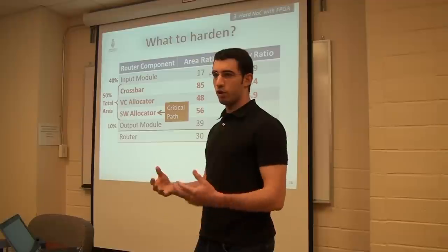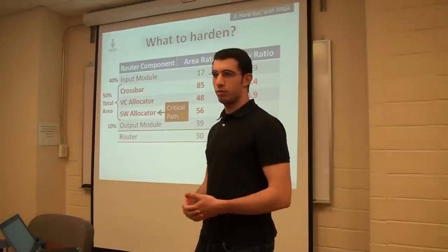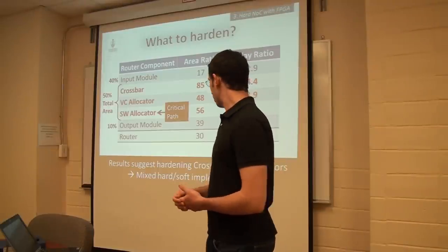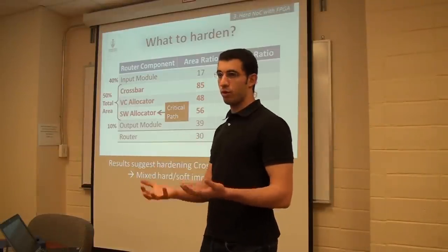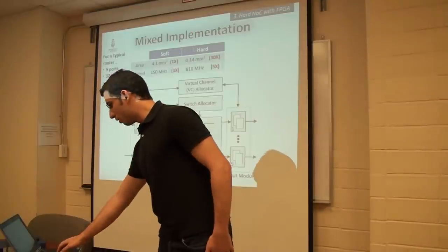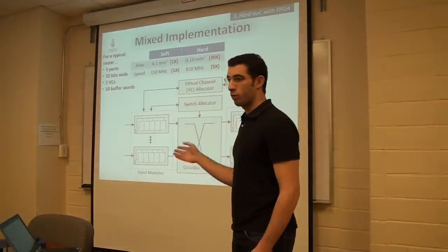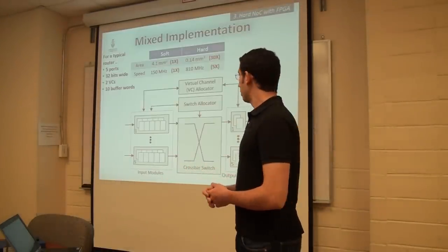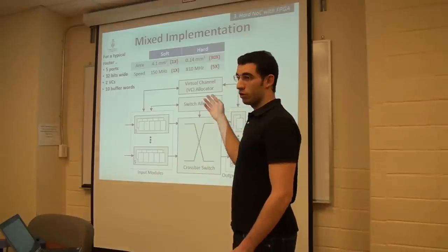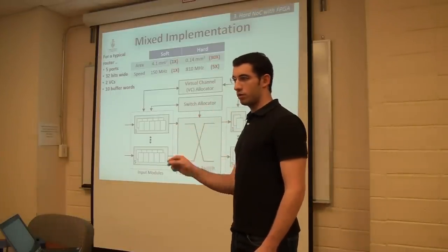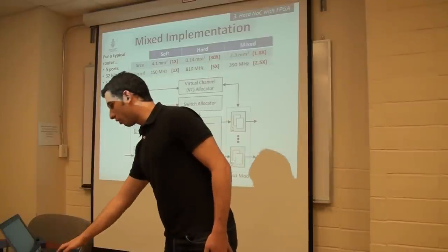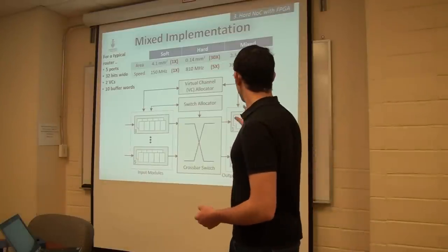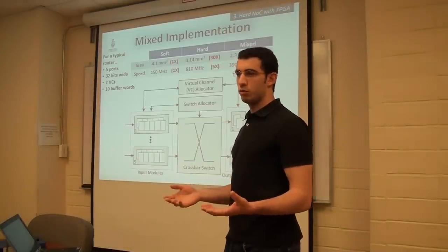The results suggest a mixed implementation would be efficient. For a typical router with five ports, 32-bit channels, two virtual channels, and 10 buffer flits, a complete hard implementation was 30 times better in area and 5 times faster. The mixed implementation — hardening only allocators and crossbar — was less than 2 times better in area and about 2.5 times faster. Not great, but still a gain.